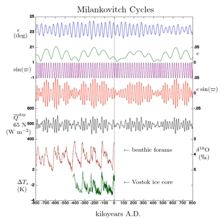The tilt last reached its maximum in 8,700 BCE. It is now in the decreasing phase of its cycle, and will reach its minimum around the year 11,800 CE.